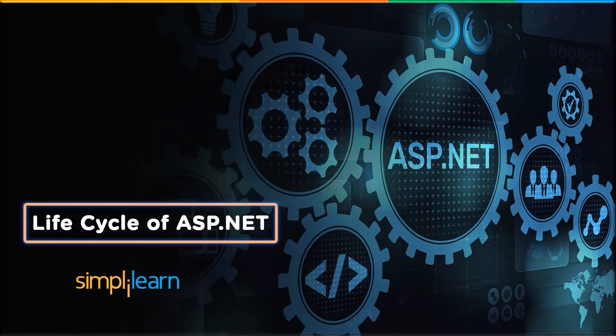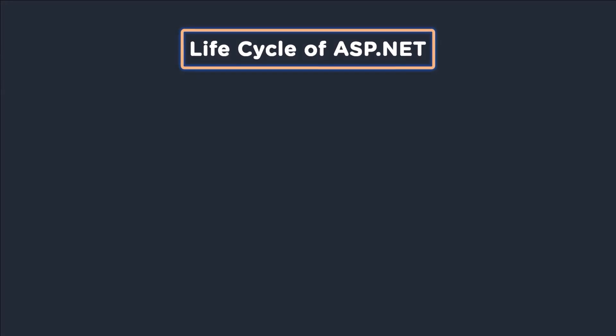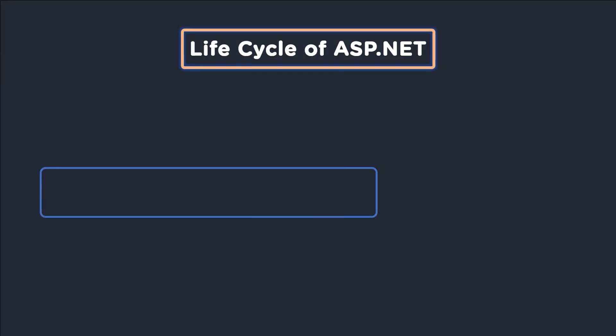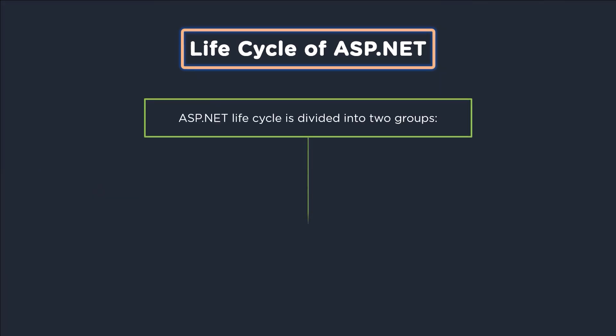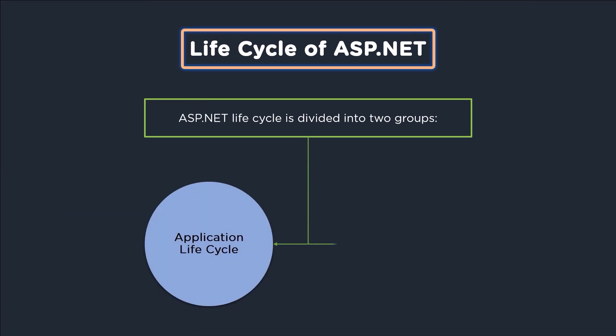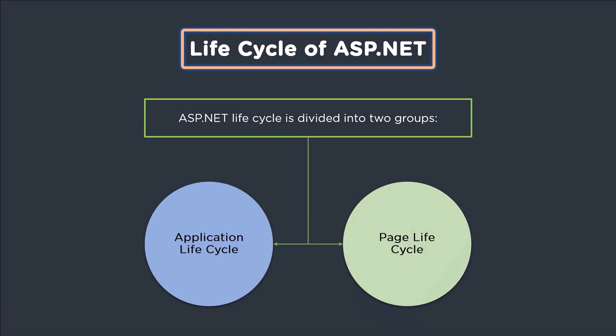Now that we know what ASP.NET is, it is time to move on to the life cycle of ASP.NET. The ASP.NET life cycle is very crucial when it comes to developing applications. The life cycle includes two different stages that help in producing dynamic outputs, known as the application life cycle and the page life cycle.